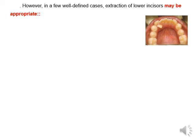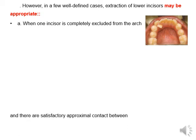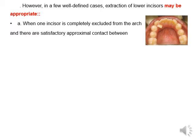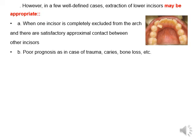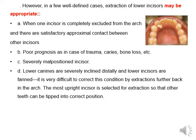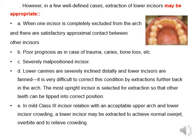However, extraction of lower incisors may be appropriate when one incisor is completely excluded from the arch and there are satisfactory approximate contacts between the other incisors; when there is poor prognosis as in cases of trauma, bone loss, or severely malpositioned incisors; when lower canines are severely inclined distally and lower incisors are flared — it is very difficult to correct this condition by extractions that further pack the arch. The most upright incisor is selected for extraction so that the teeth can be tipped into correct position. In Class 3 incisor relation with an acceptable upper arch and lower incisor crowding, lower incisor extraction may be carried out to achieve normal overjet, overbite, and to relieve crowding.